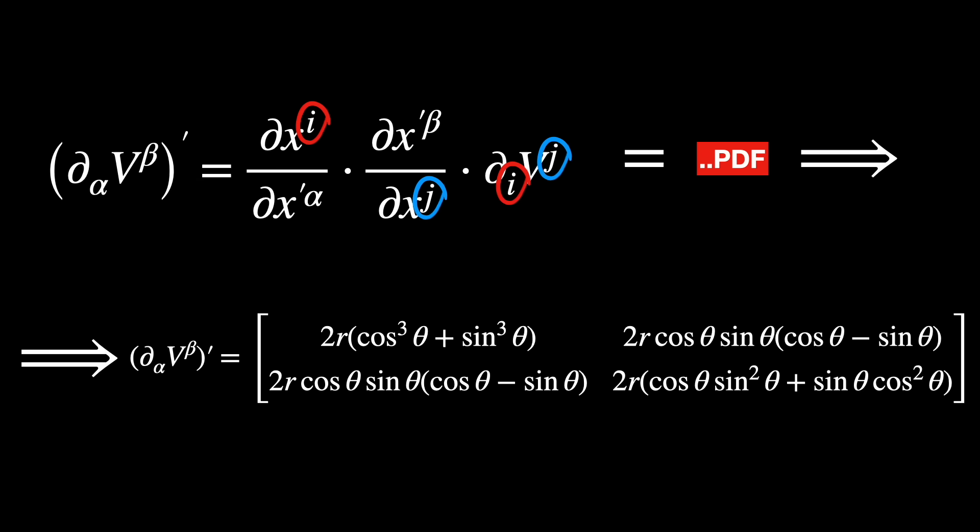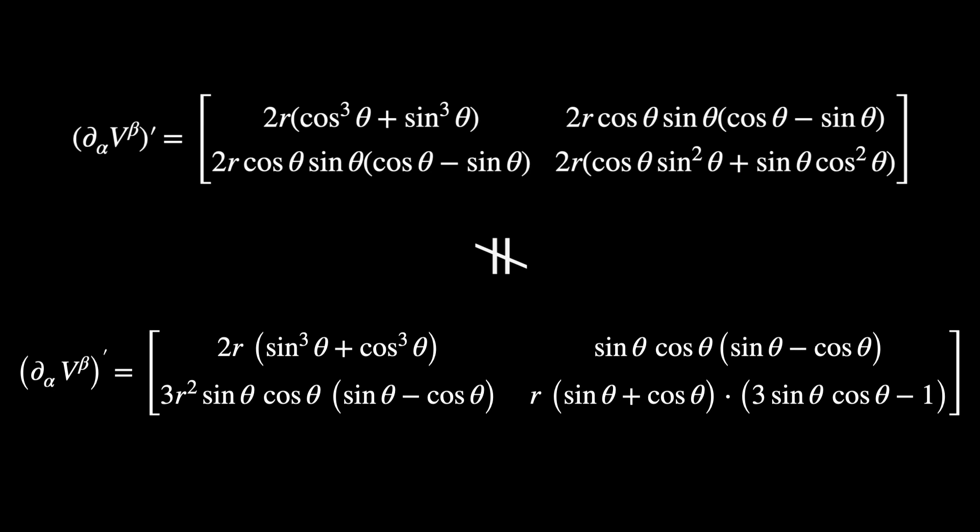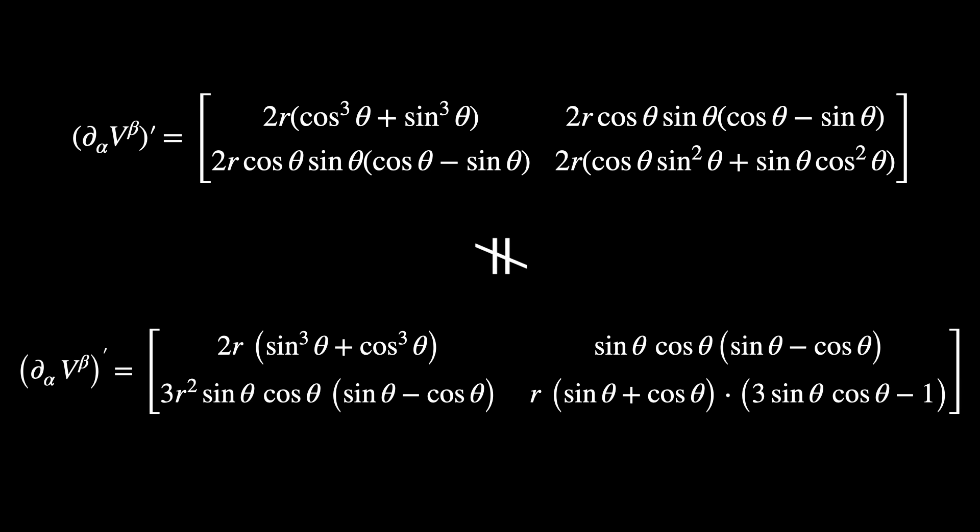After a lot of calculations, we found a different matrix from before. The conclusion is, the partial derivative of a vector field is coordinate dependent. So this object does not obey the tensor transformation rule. And therefore, it is a tensor imposter. The partial derivative of a vector field is not intrinsic to the manifold.